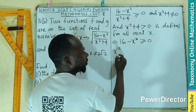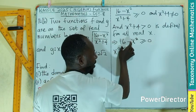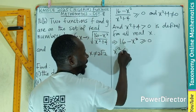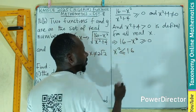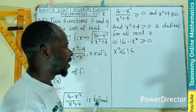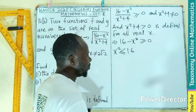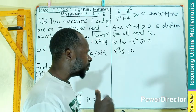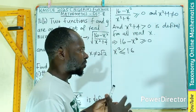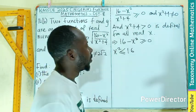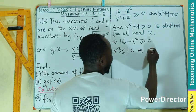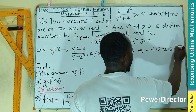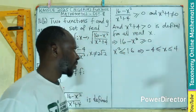Transposing, we get x squared is less than or equal to 16. Taking the square root of both sides gives us negative 4 and positive 4 as boundary values, so x squared less than or equal to 16 implies negative 4 is less than or equal to x, which is less than or equal to 4.